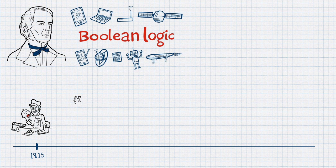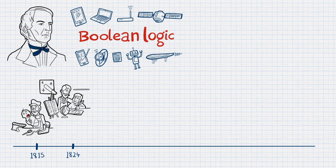George Boole was born in 1815 and had a natural flair for mathematics and problem solving. His father was a shoemaker who was passionate about science and passed on his love for science to his son.